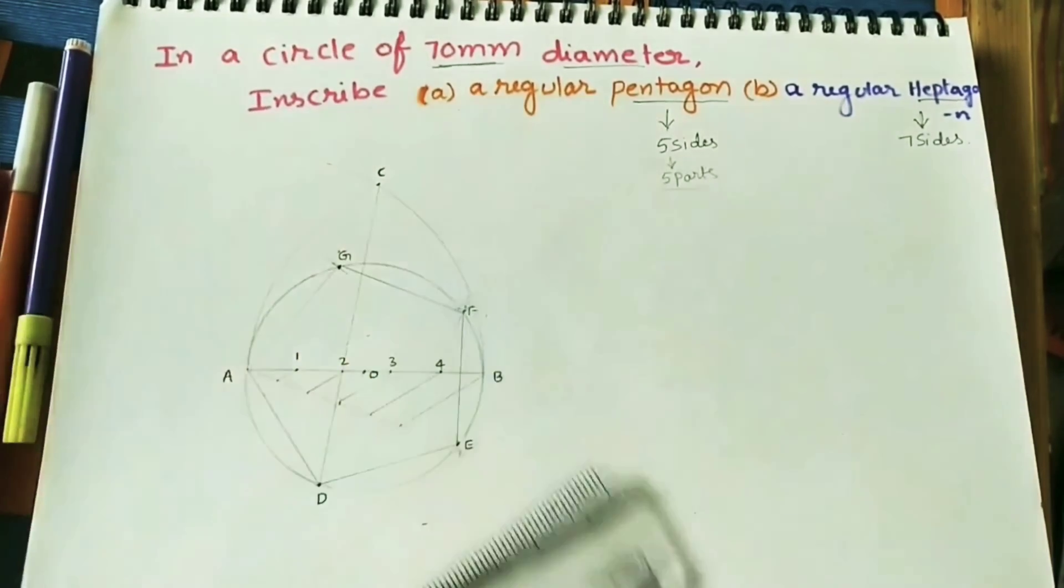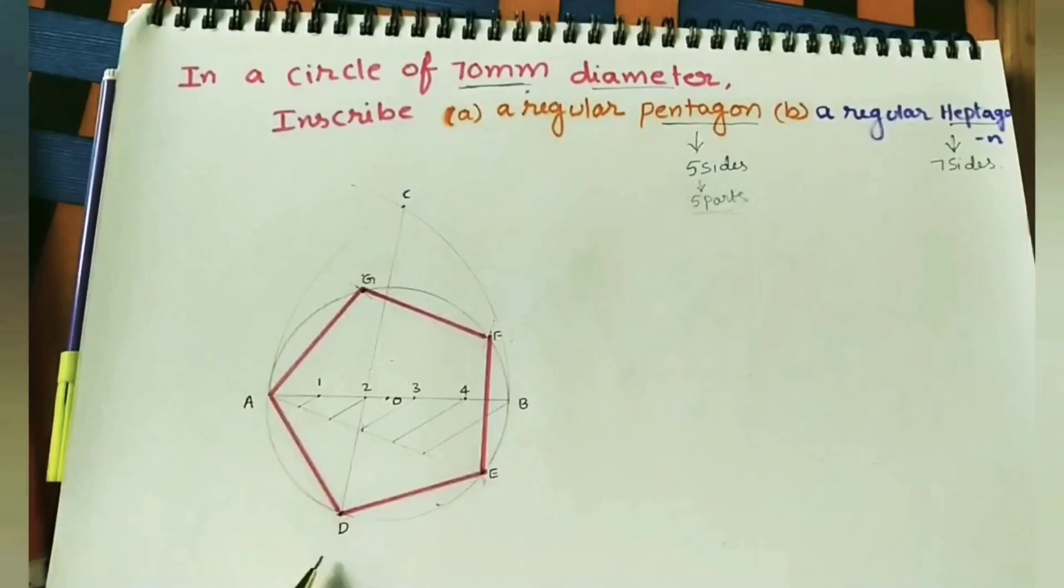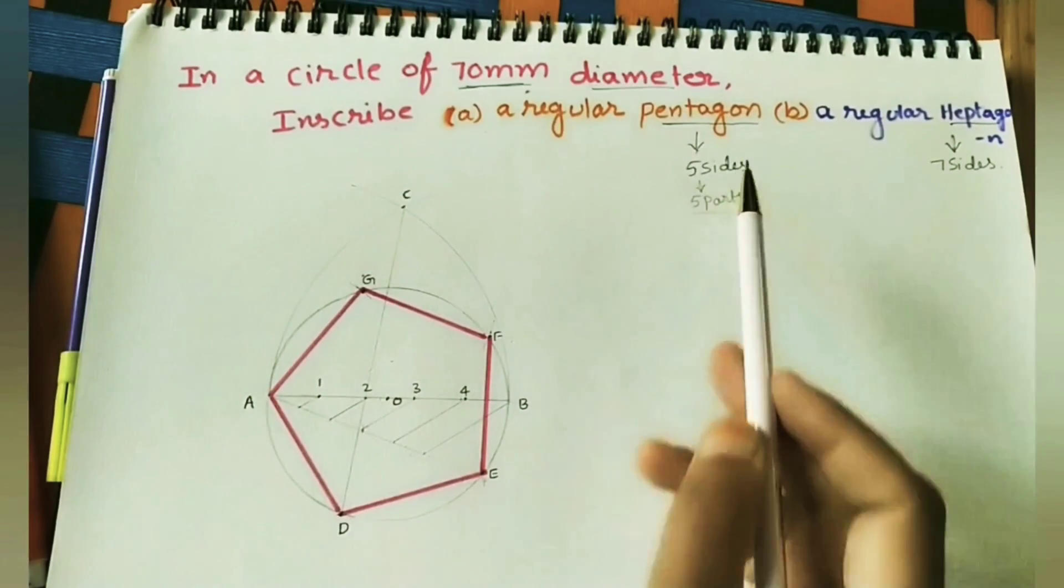So, this is the required pentagon. It has 5 sides. This method is called inscribe circle method.